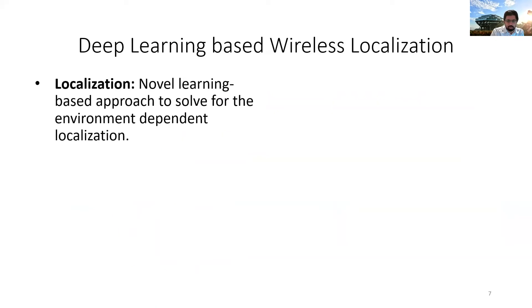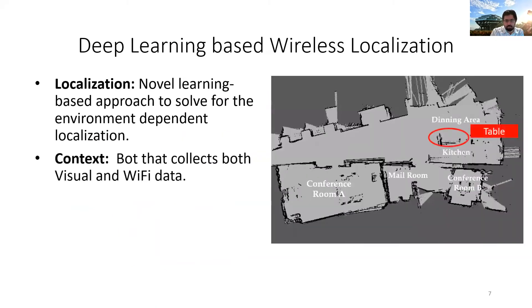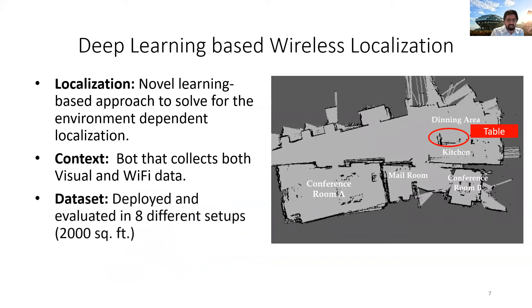Secondly, we design a bot that gives us both context of the map for this location and also collects labeled Wi-Fi data for training our model. Finally, we deployed, collected and released a public dataset of more than 108,000 data points for training and testing under eight setups. Now let's see how we do this.